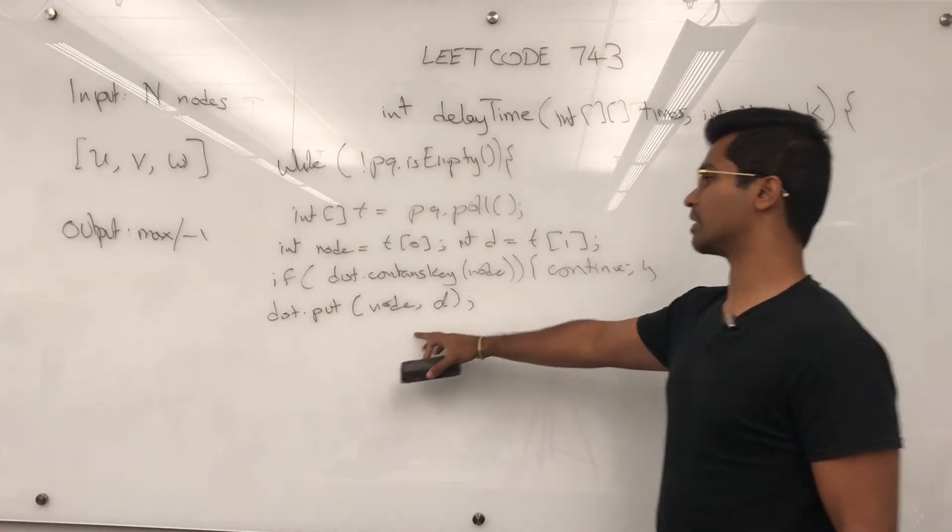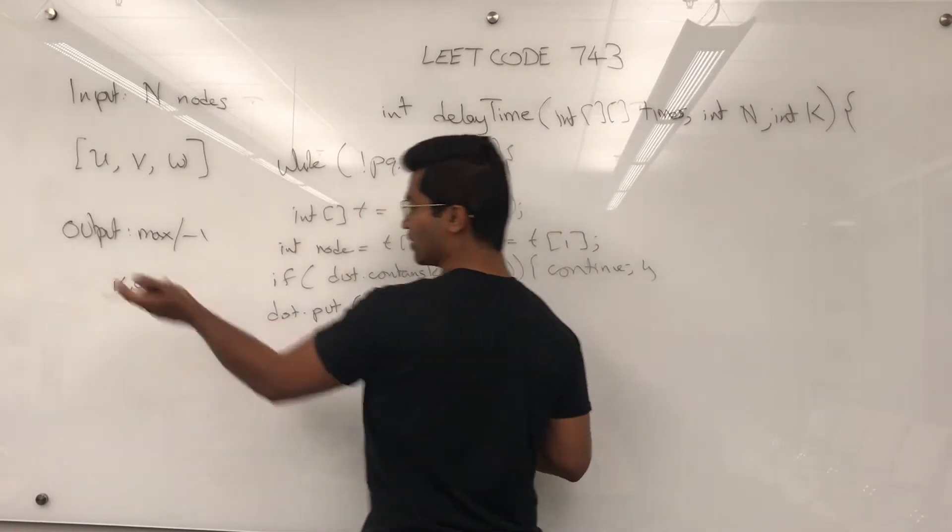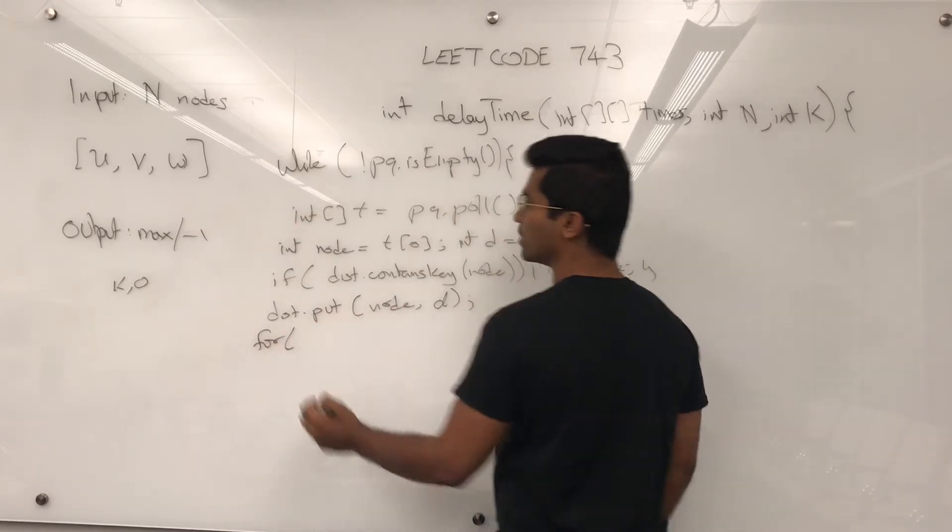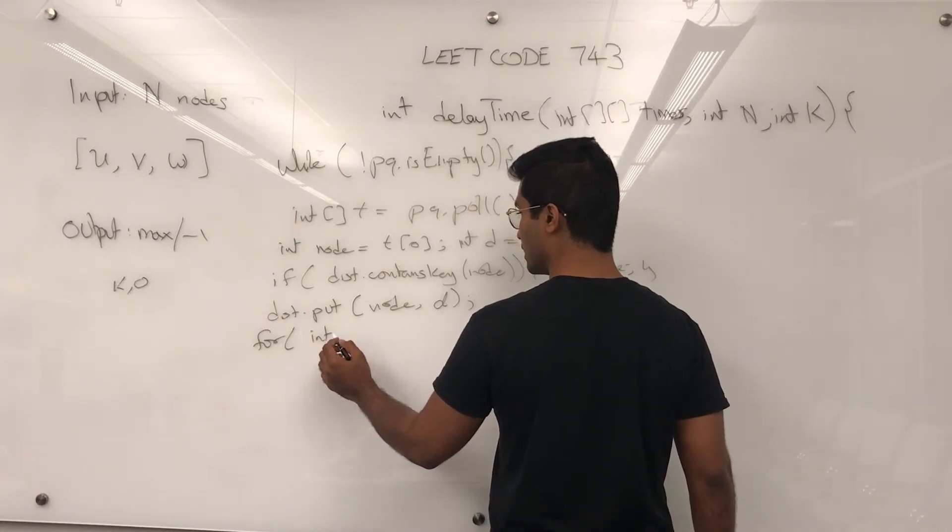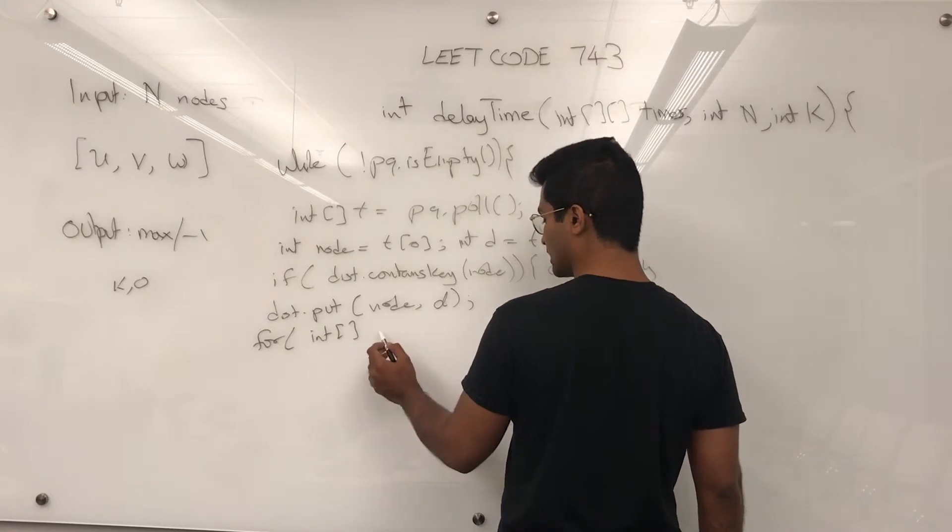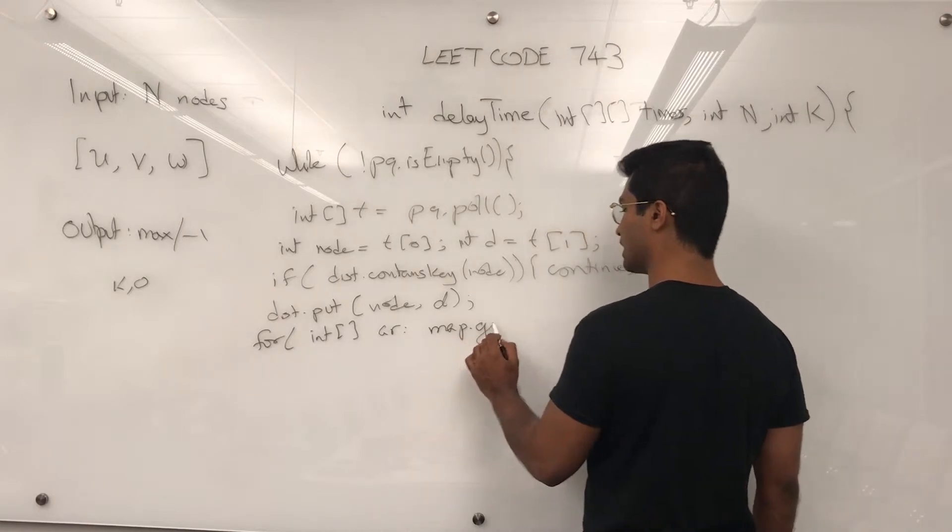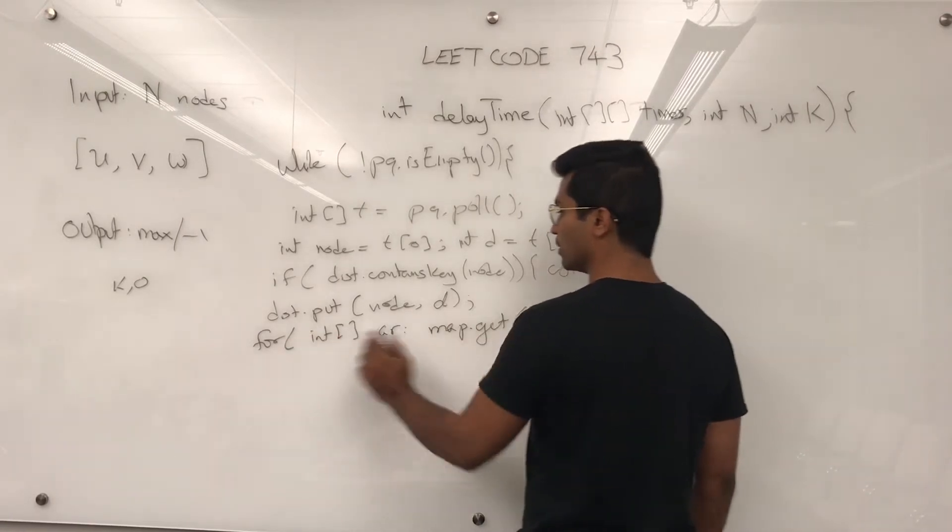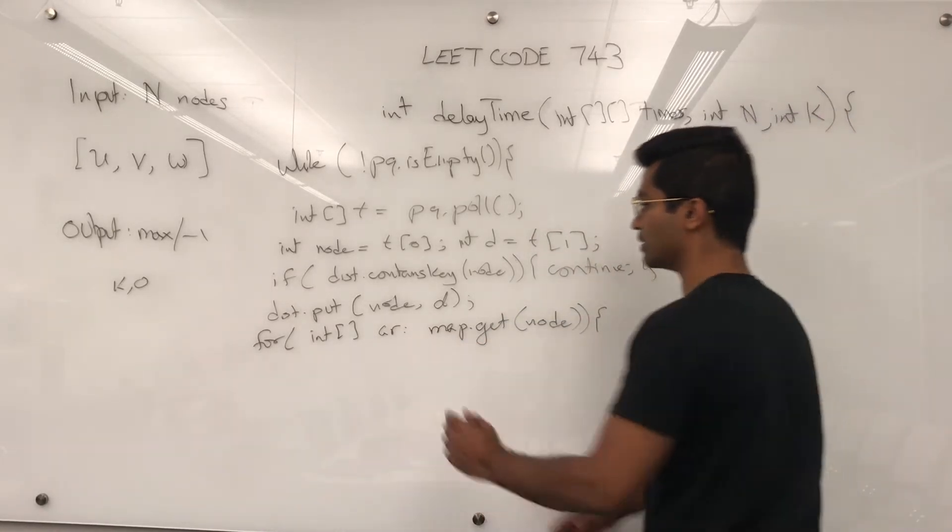Distance initially, it's going to say k is 0 away from itself. And similarly, whatever node is going to be that much distance. So, once we put that, what we have to do is go through, we have to make use of our adjacency list. for int array, let's say ar through map dot get node, we go through that. What we have to do is extract this.